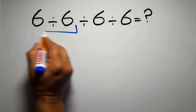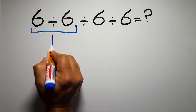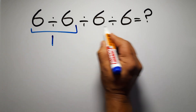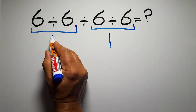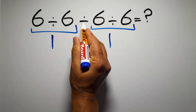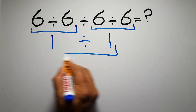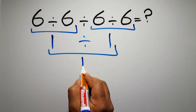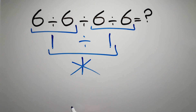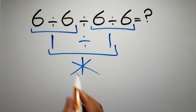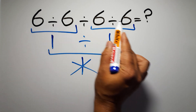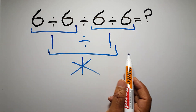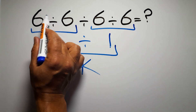6 divided by 6 gives us 1, and again here we have 6 divided by 6, so 1 divided by 1, which equals 1. But this answer is not correct, because according to the order of operations, when we have more than one division in an expression, we have to work from left to right.